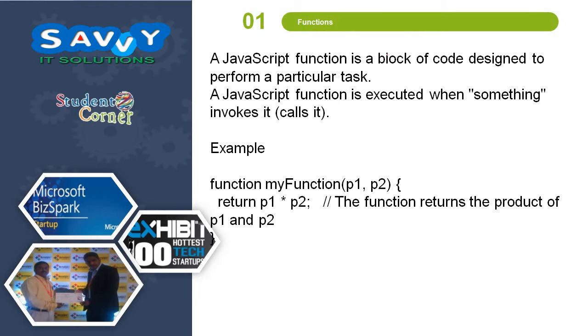A JavaScript function is a block of code designed to perform a particular task. These statements are represented with a function. Let us assume my function. Whenever we are calling this function, continuously the block of statements will be executed repeatedly. So that is the exact meaning of JavaScript function.